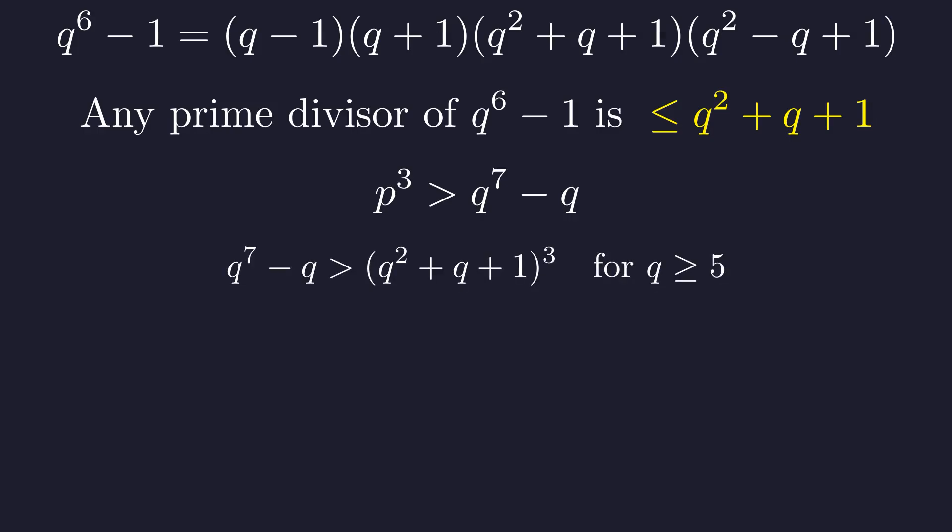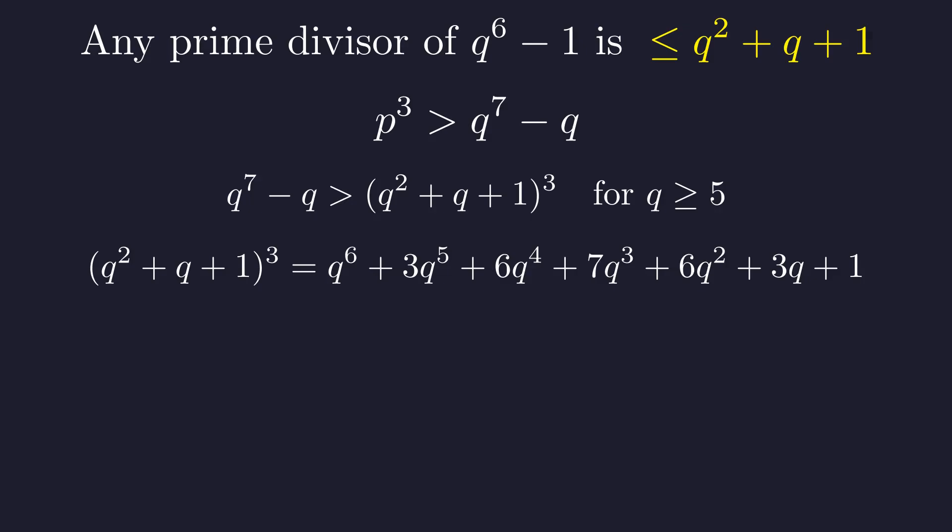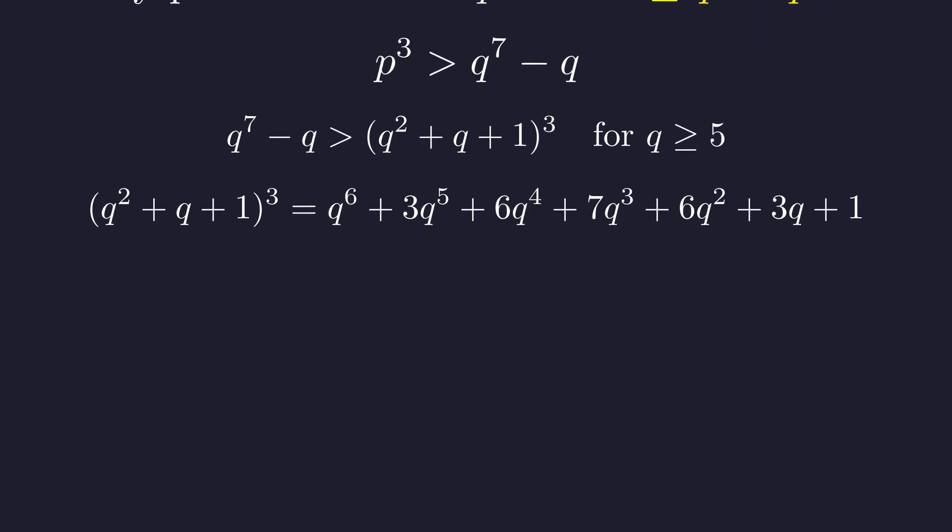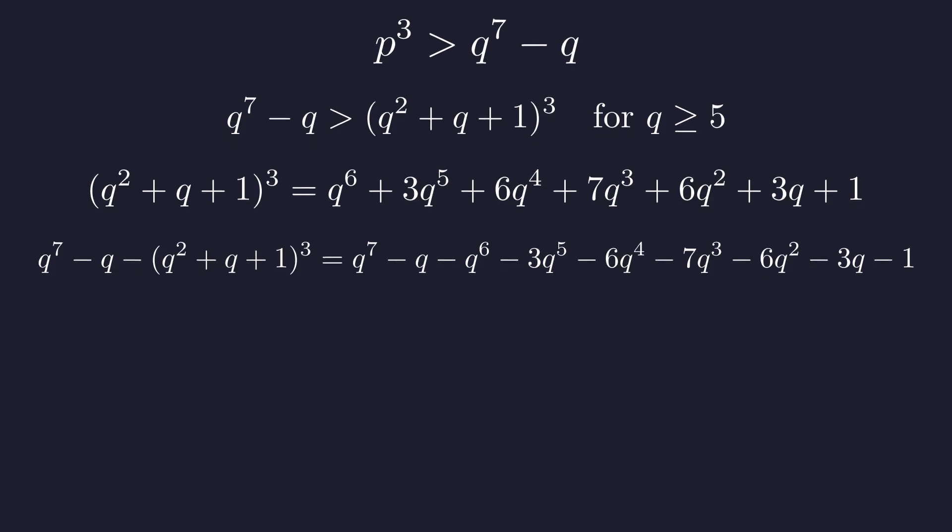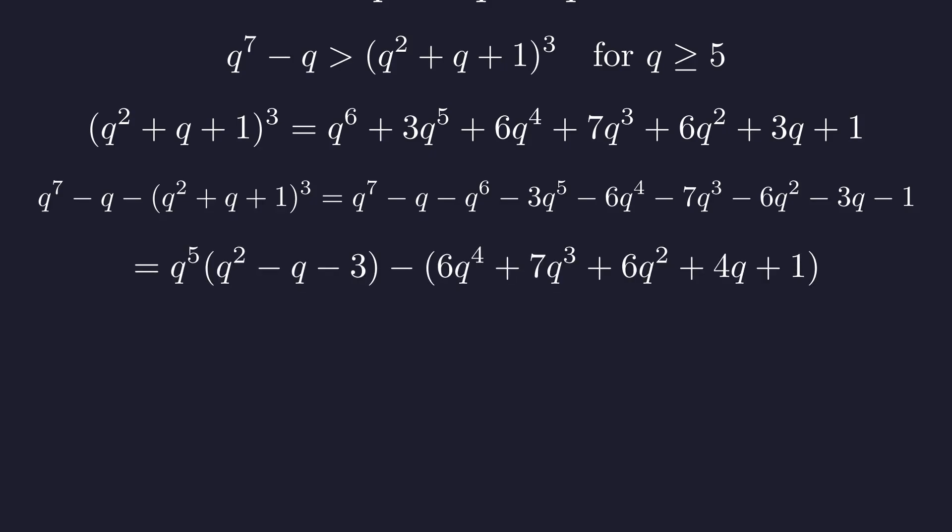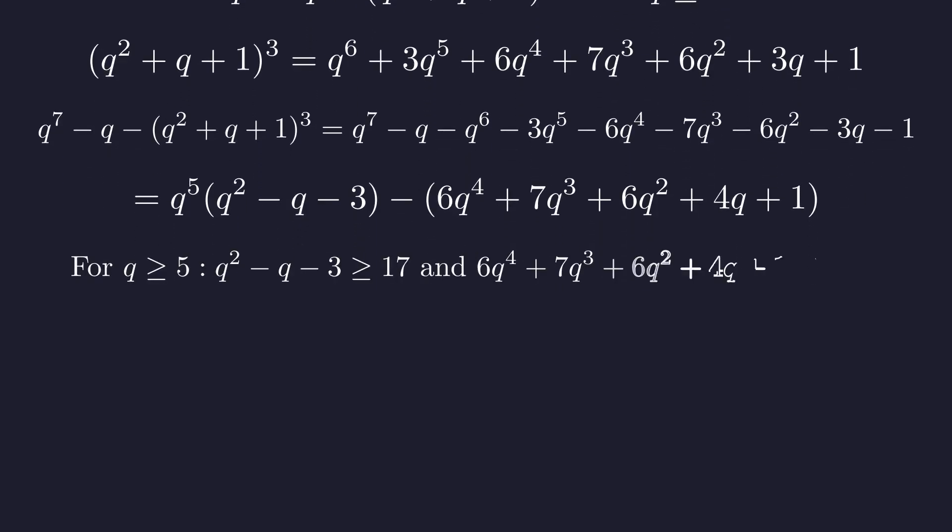Now we will prove a crucial inequality. q to the 7th minus q is greater than the quantity q squared plus q plus 1 cubed when q is at least 5. Expanding the cube of q squared plus q plus 1 gives us this polynomial. Subtracting this expansion from q to the 7th minus q yields this expression. Factoring and grouping terms, we can rewrite this as q to the fifth times the quantity q squared minus q minus 3 minus the remaining lower order terms. For q greater than or equal to 5, we can establish that q squared minus q minus 3 is at least 17, and the sum of the lower order terms is at most 24 times q to the 4th.